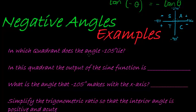So in which quadrant does the angle negative 105 degrees lie? That is smaller than negative 90 and larger than negative 180, so it's in the third quadrant, Q3. In this quadrant, the output of the sine function—only tan is positive in this quadrant—so the output of the sine function is negative.